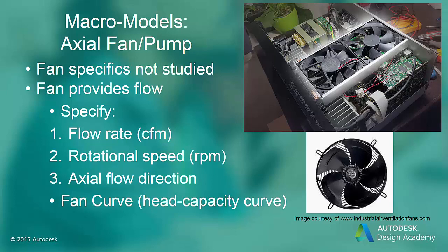To use the fan macro model, we represent the fan as a block part and specify it as a fan material type. The data required is the flow rate, rotational speed, and flow direction. For most fans, you would specify the flow rate as a constant. Pumps may have a pump curve, in which case you would specify the head capacity curve. Note that you can control when the fan is on or off by a thermostat, which is sometimes useful for electronic equipment like your laptop.